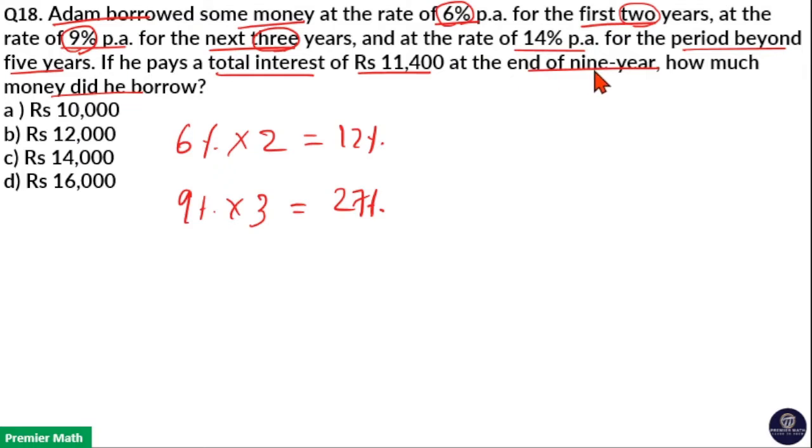Now, total number of years is 9 years and period beyond 5 years, he paid 14% per annum. So 9 minus 5 is 4 years. So for 4 years, he paid 14% per annum.